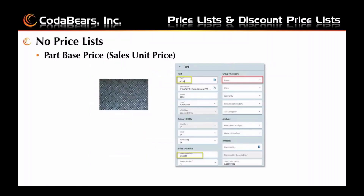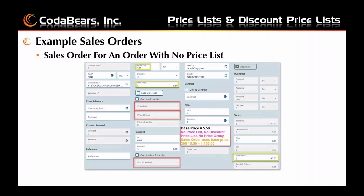If a part has no price lists and it's not on a group, the sales unit price in part maintenance applies — in this example $5.50. Here's a sales order for a part with no price list, no discount price list, no price group. The order quantity is 200 and the unit price is $5.50, which multiplies out to a $1,100 total for this line.